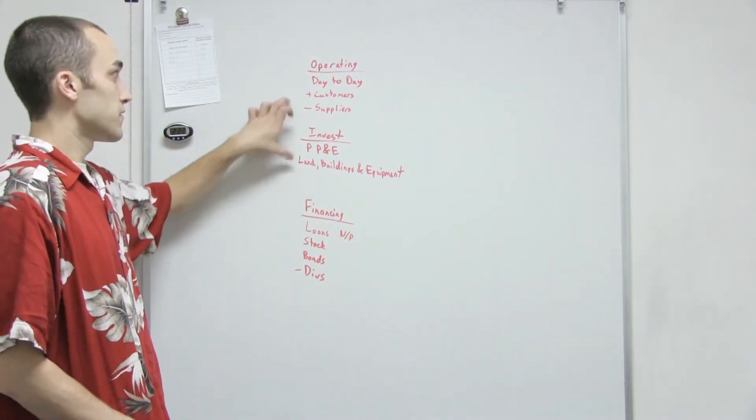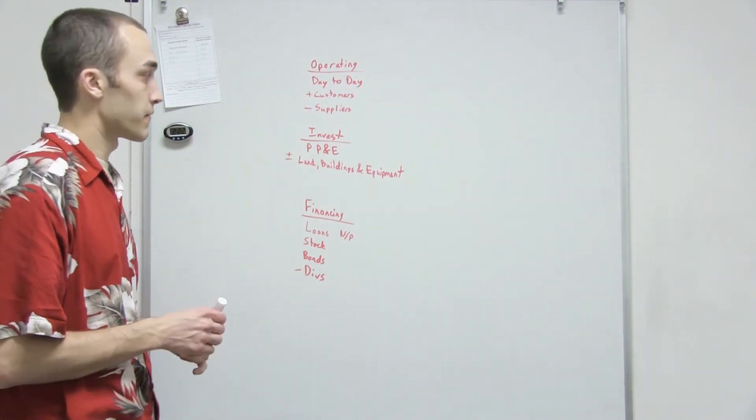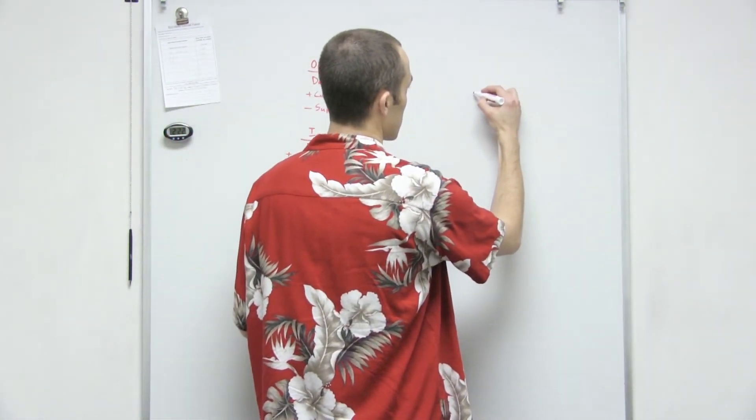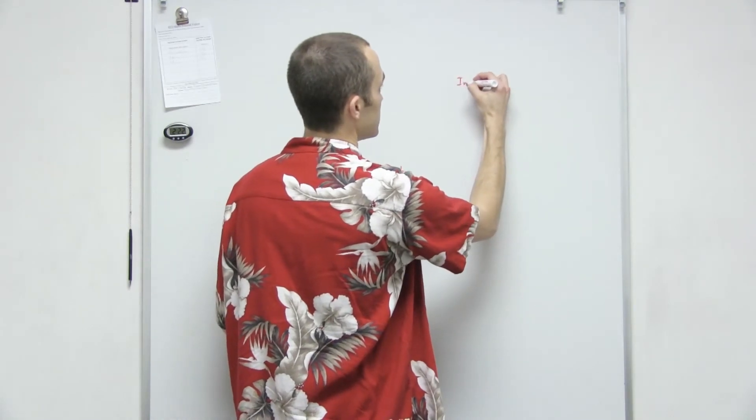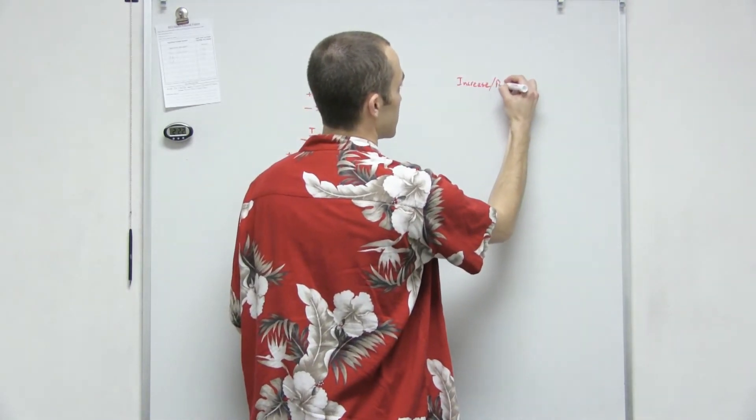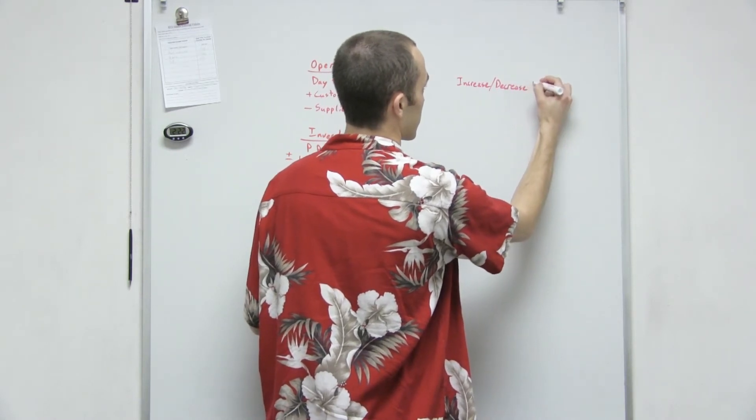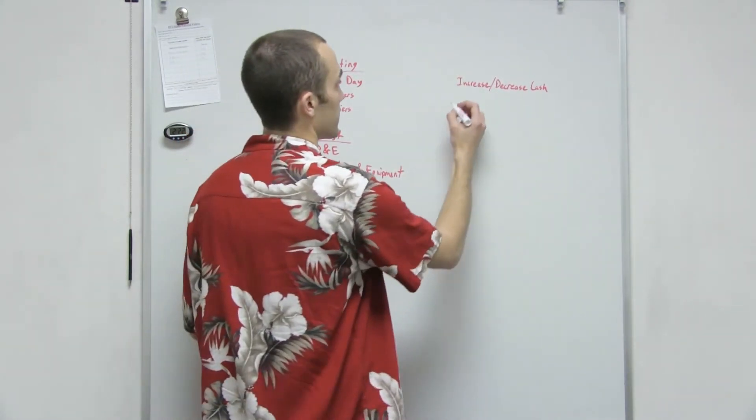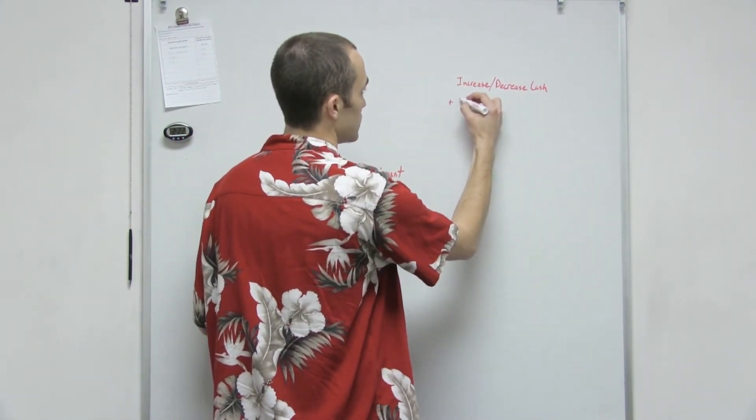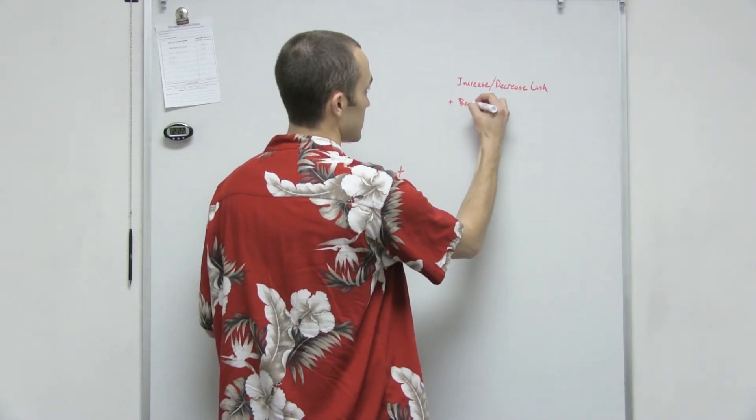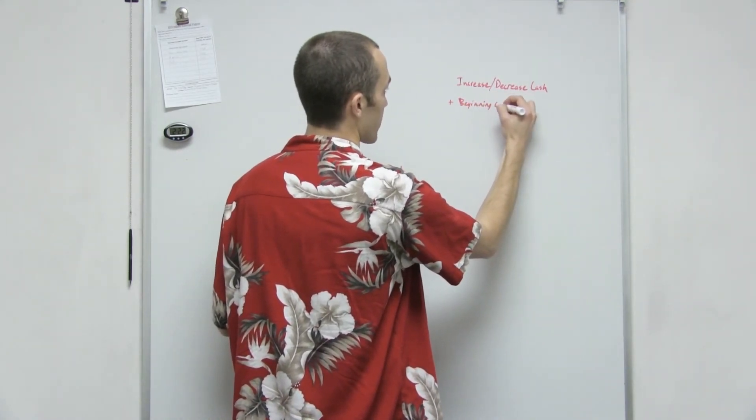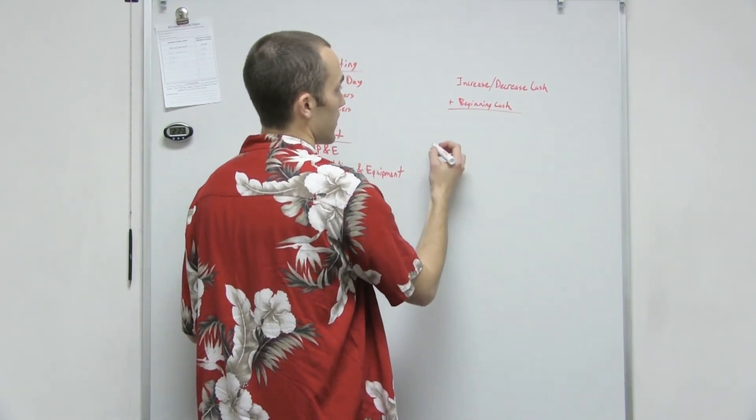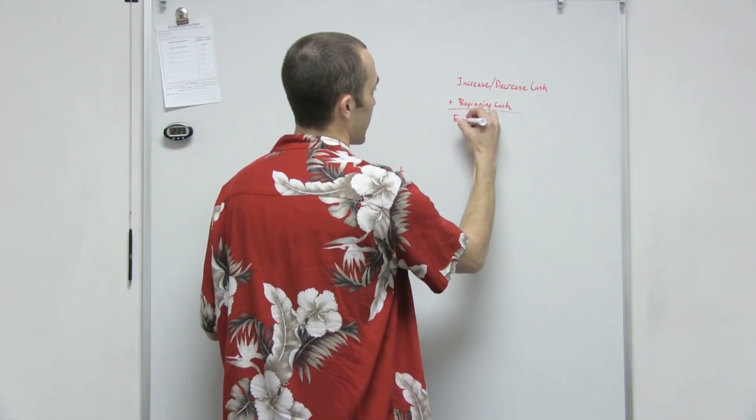And so once you get these three sections figured out - how much money you got from there - then your next step is you're going to add that up and get an increase or a decrease in cash. And then you're going to add that to your beginning cash, and that will be your ending cash balance.